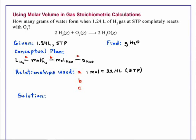Once we have the moles of hydrogen, we can relate that to moles of water by looking at the stoichiometric factor from the balanced equation. We see that 2 moles of hydrogen react to produce 2 moles of water.